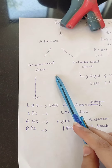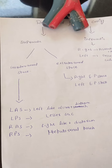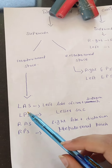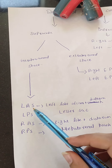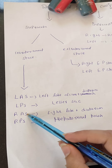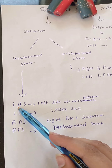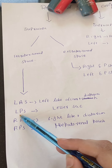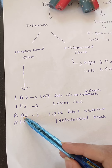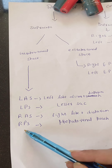Let us first look at the intraperitoneal spaces. In intraperitoneal spaces, we have two spaces on the left side and two spaces on the right side. On the left side, there is left anterior space and left posterior space. On the right side, there is right anterior space and right posterior space.